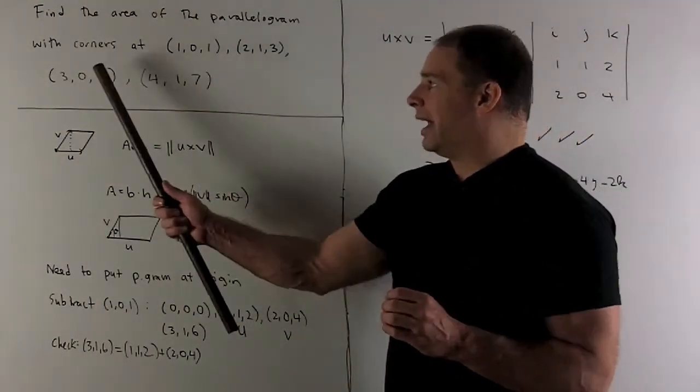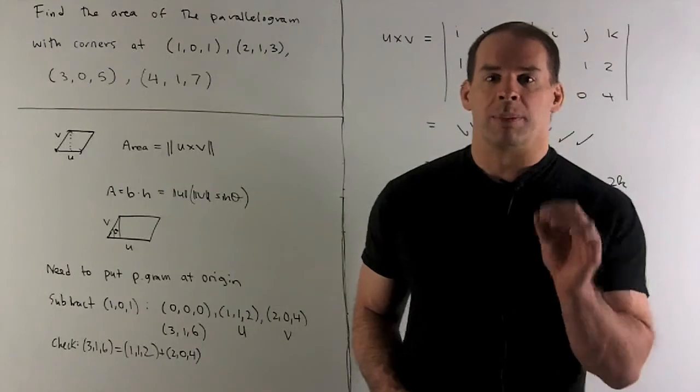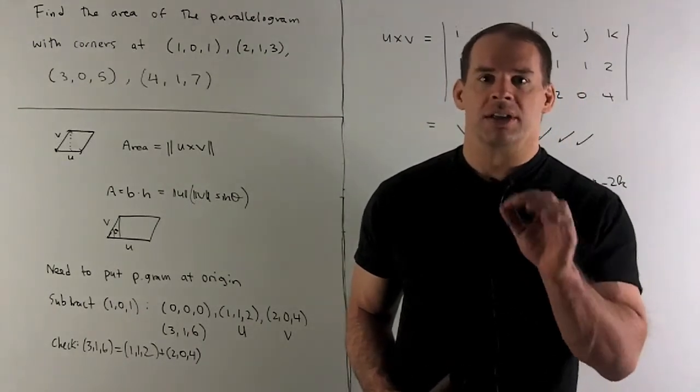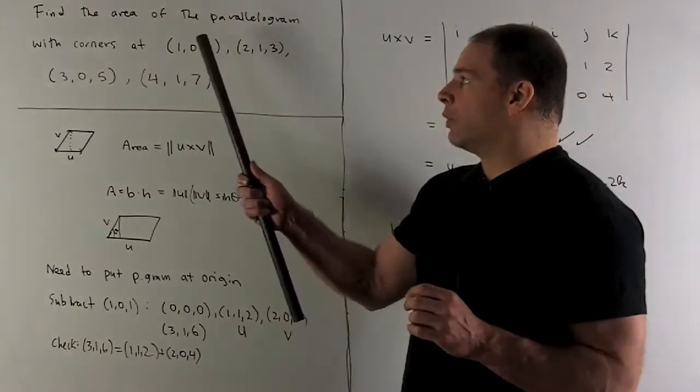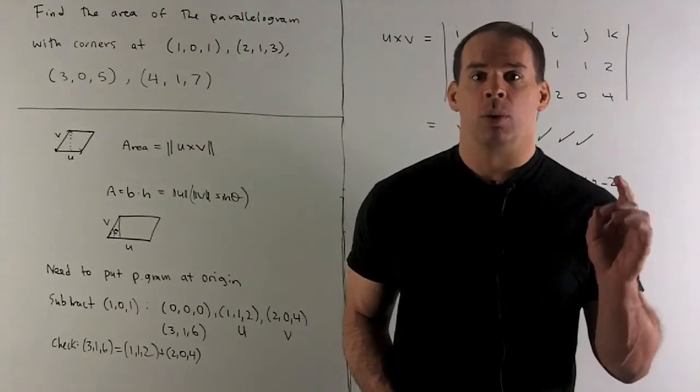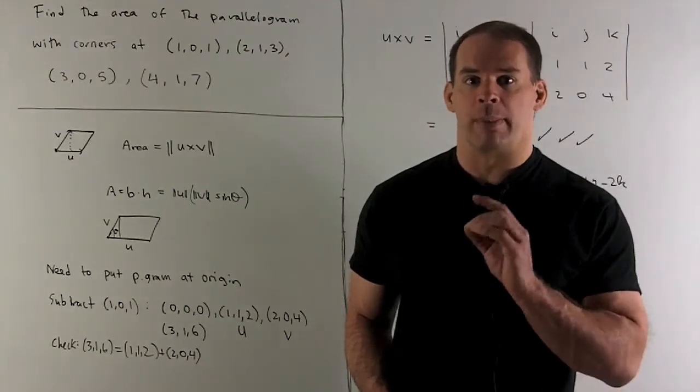So what we'll do is, we'll take a look at our points, and we're just going to want to shift the parallelogram to the origin. So, I'm going to move 101 to the origin, which means I'm going to subtract 101 off of each of my points.